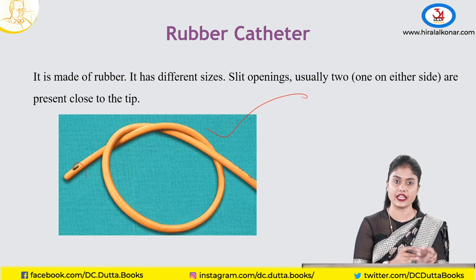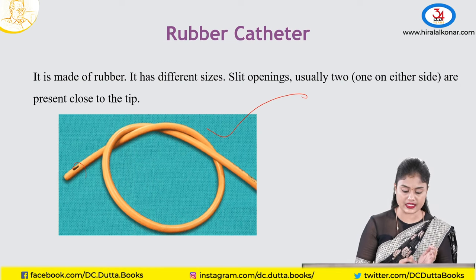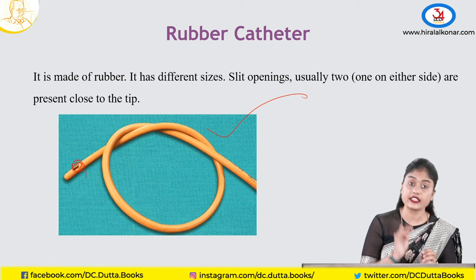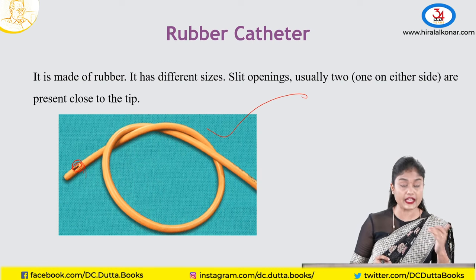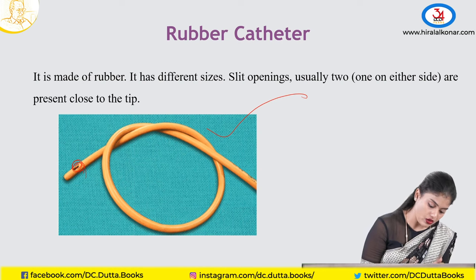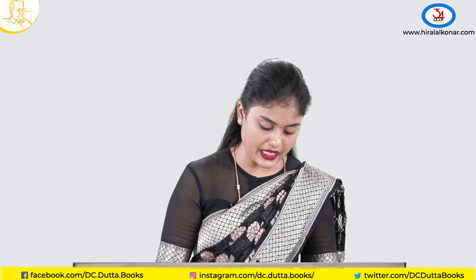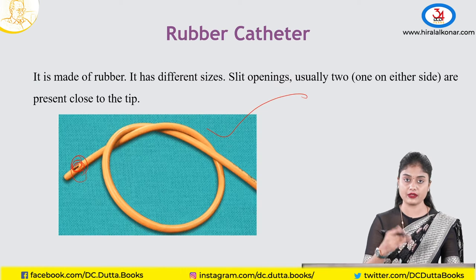For pediatrics, they use 8 French also. There is a slit opening at the tip of the instrument — you can see it here. That helps you to drain the bladder. There will be two slit openings on either side of the catheter, which helps to drain the bladder.